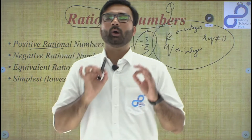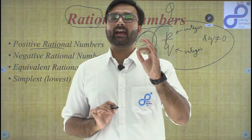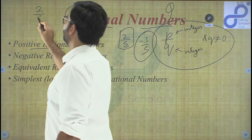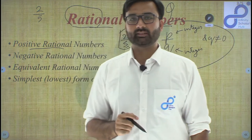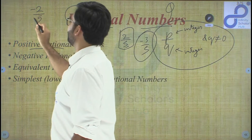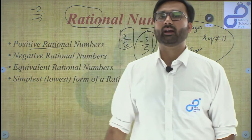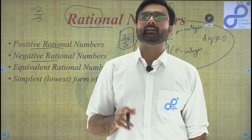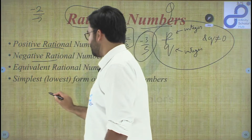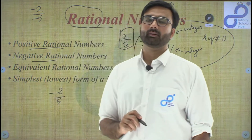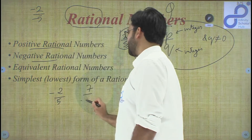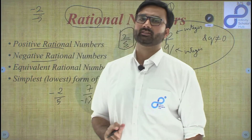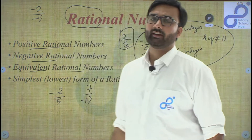For positive rational numbers: if the numerator and denominator have the same sign, the rational number is positive. For example, two upon five is positive, and minus two upon minus five is also positive. For negative rational numbers: if either the numerator or denominator is negative, the rational number is negative. For example, minus two upon five is negative, and seven upon minus thirteen is also a negative rational number.